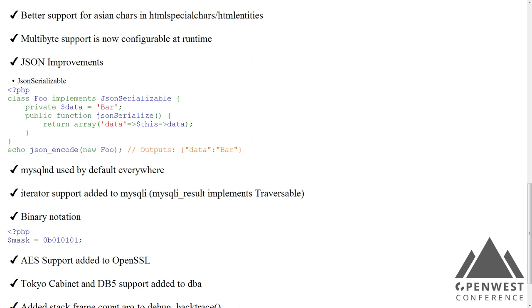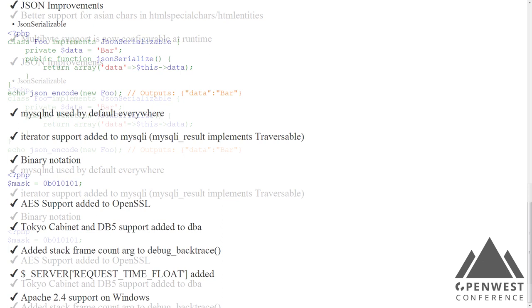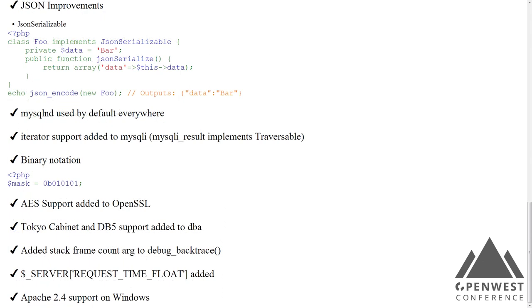There's iterator support in MySQLi. There's a new binary notation — just like you can do 0x for hexadecimal, you can do 0b now for binary — very minor feature. There's also a request time float. We had server_request_time that gives you the timestamp of the request, but for busier systems that's not granular enough, so you can get it down to the microsecond now. Usually you actually just want the timestamp of the request, not the time at whatever point in your PHP code you call time(). If you're calling it multiple times, it's just a waste of a system call. It's generally a good idea to just use server_request_time or request_time_float.